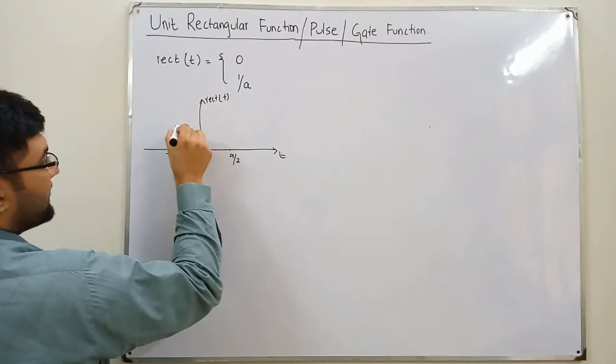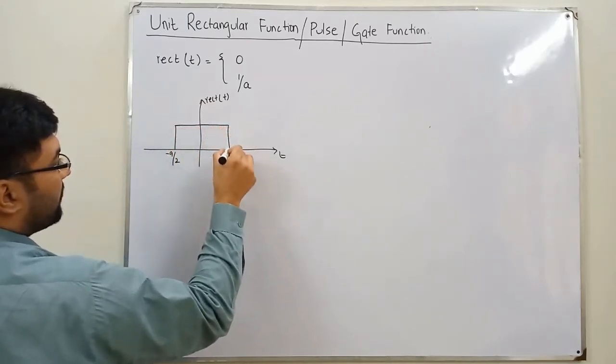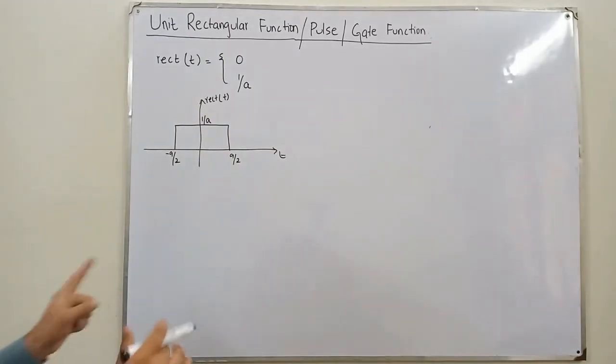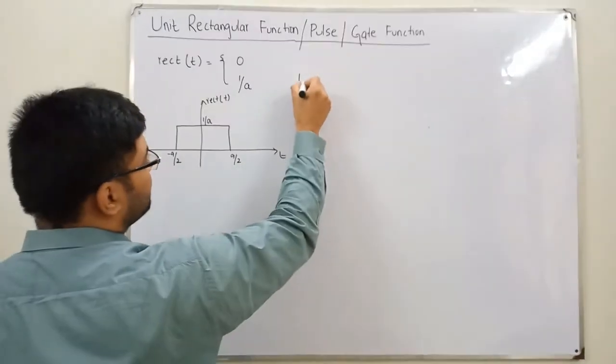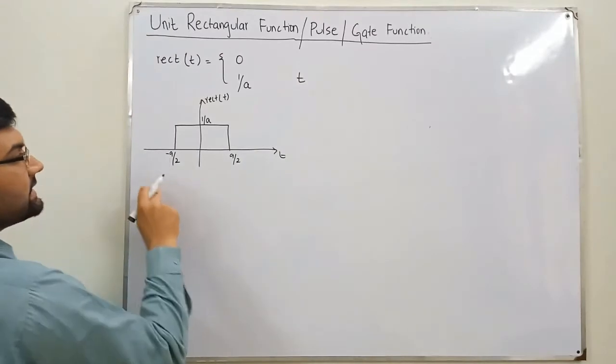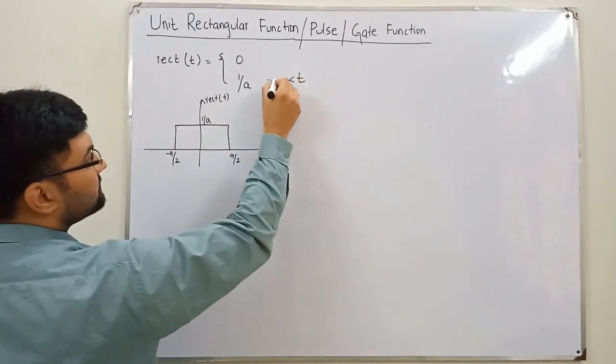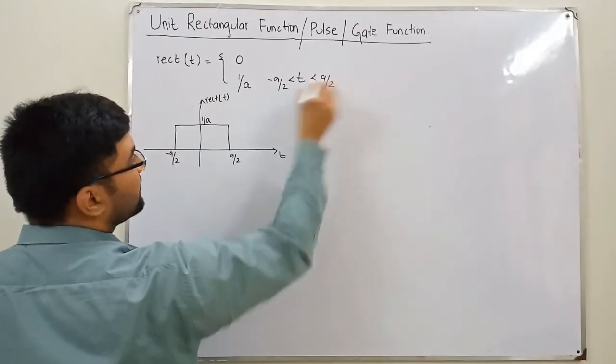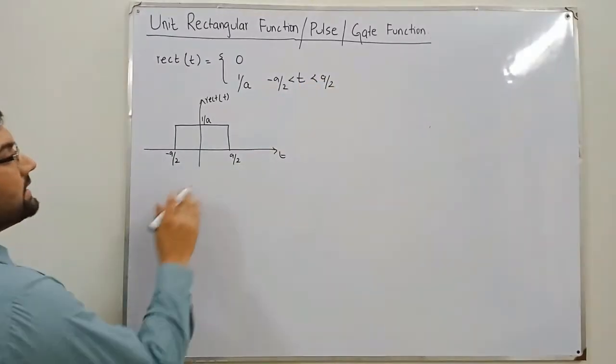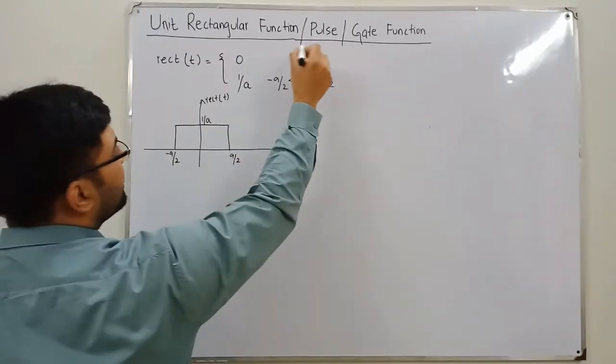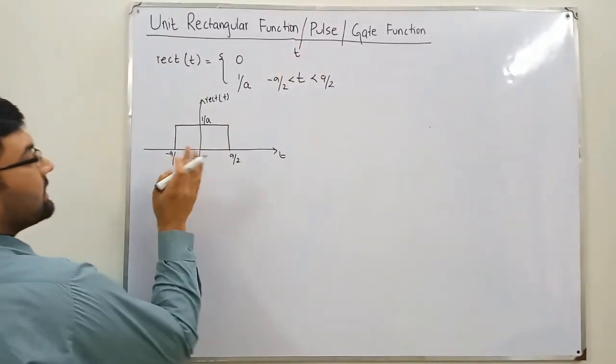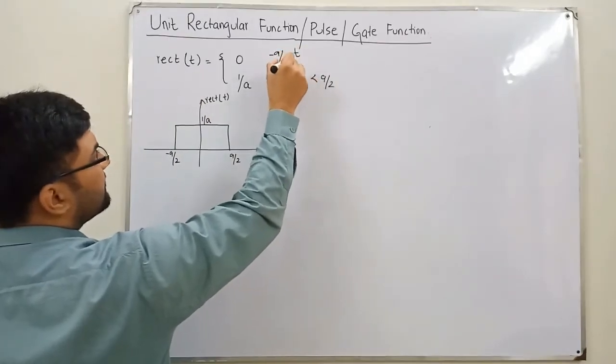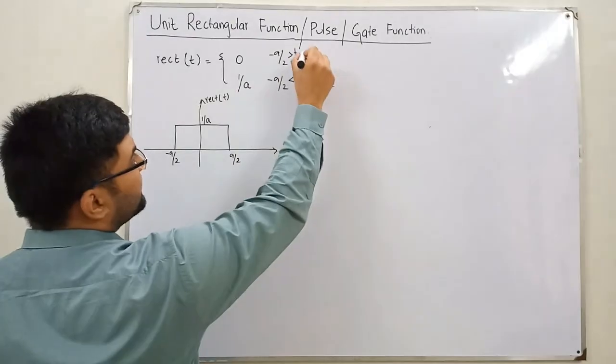You have the value of the function as 1 over a. So 1 over a is the value of the function if the time is greater than negative a by 2 and it is less than positive a by 2. And similarly it is 0 otherwise. So it is 0 when the time is less than negative a by 2 and when it is greater than positive a by 2.